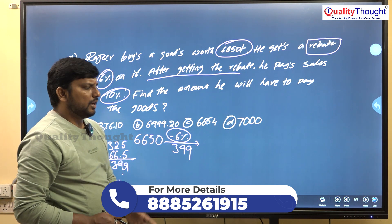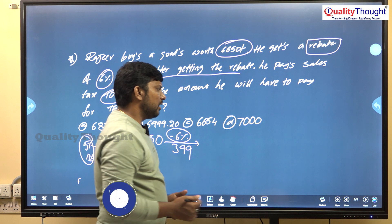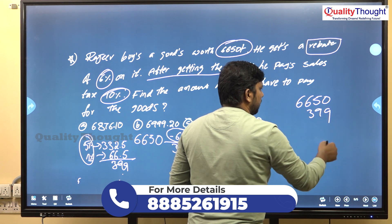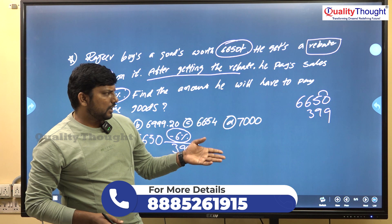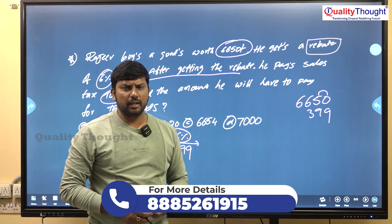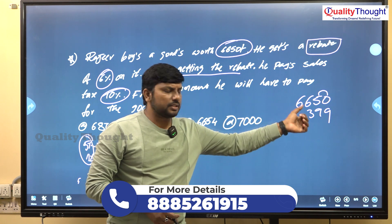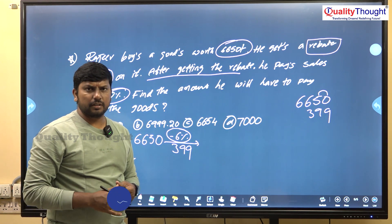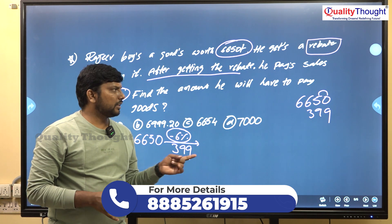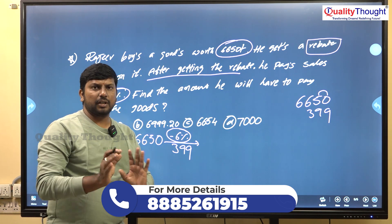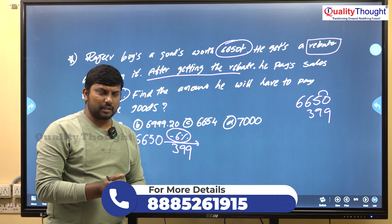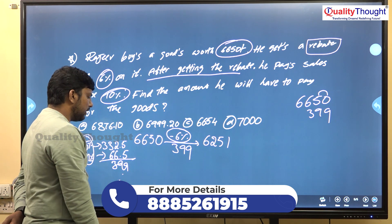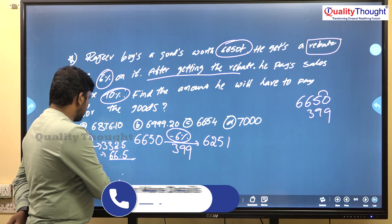So 6,650 minus 399. Simple logic: 6,650 minus 400 is 6,250, so adding back 1 gives 6,251 rupees after the 6% rebate.